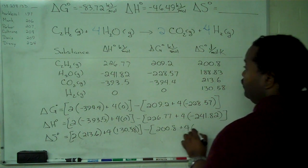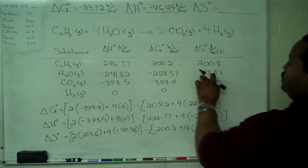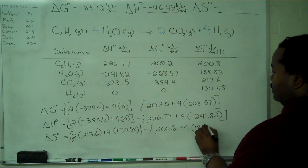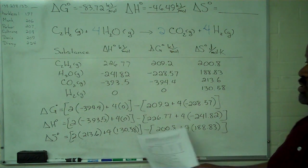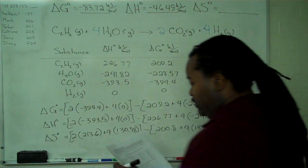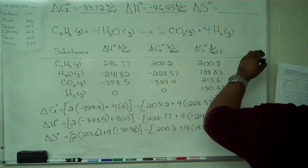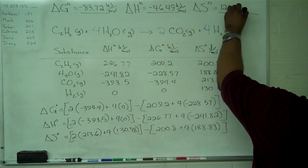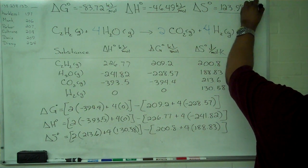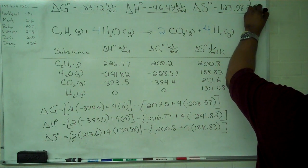and four times 188.83. And so when we simplify this all the way out to get a value for our delta S, we get 123.98 joules per mole kelvin.